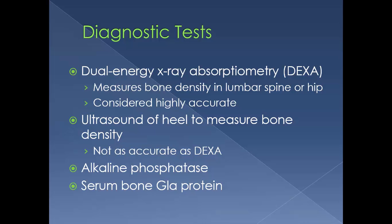Lab tests include alkaline phosphatase, which may be increased following a fracture. Serum bone GLA protein, also known as osteocalcin, is used as a marker for osteoclast activity and therefore an indicator of bone turnover. However, it is more useful in evaluating the effectiveness of treatment than to indicate the severity of the osteoporosis itself.